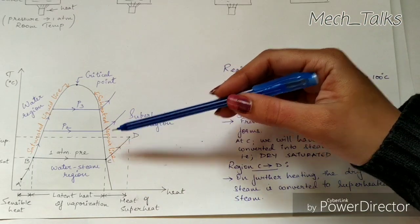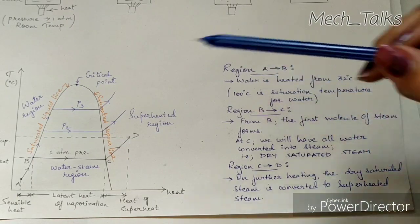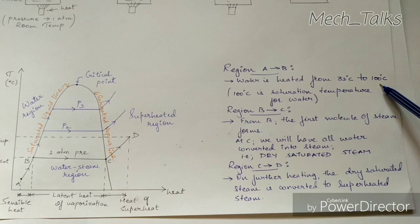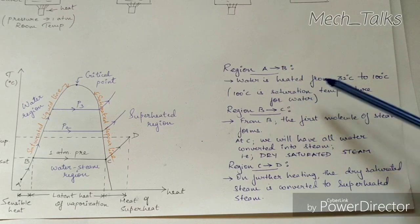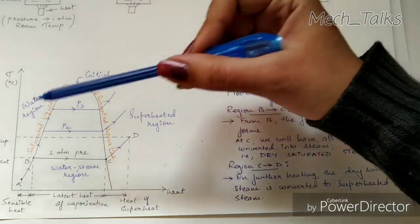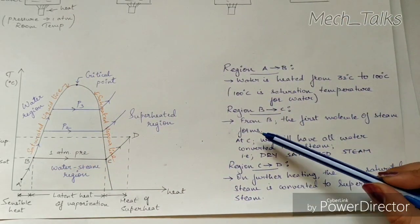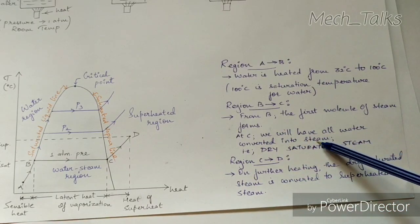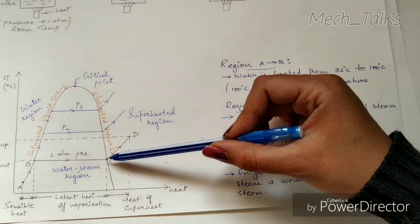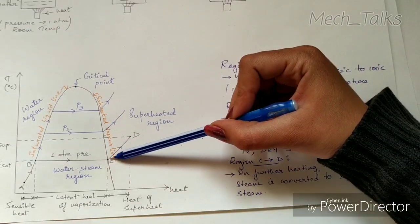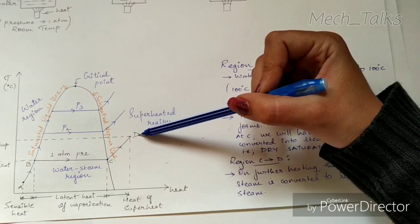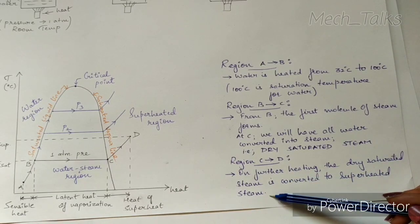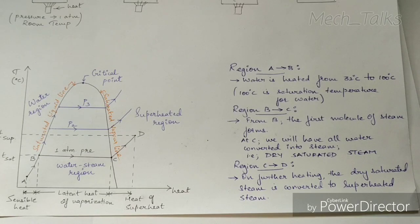To summarize: region A to B indicates water heated from 32 degree centigrade up to 100 degree centigrade, the saturation temperature. From B to C, the first molecule of steam starts forming at B and with the passage of time at point C all the water is converted into dry saturated steam. For region C to D, on further heating the dry saturated steam at constant pressure, we get completely superheated steam at point D.